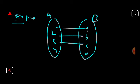1 is mapped to A, 2 is mapped to B, 3 is mapped to C, 4 is mapped to D. This is function.